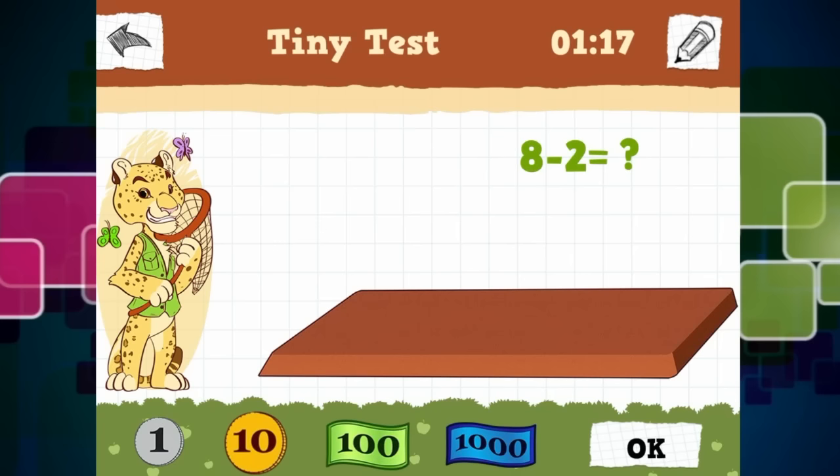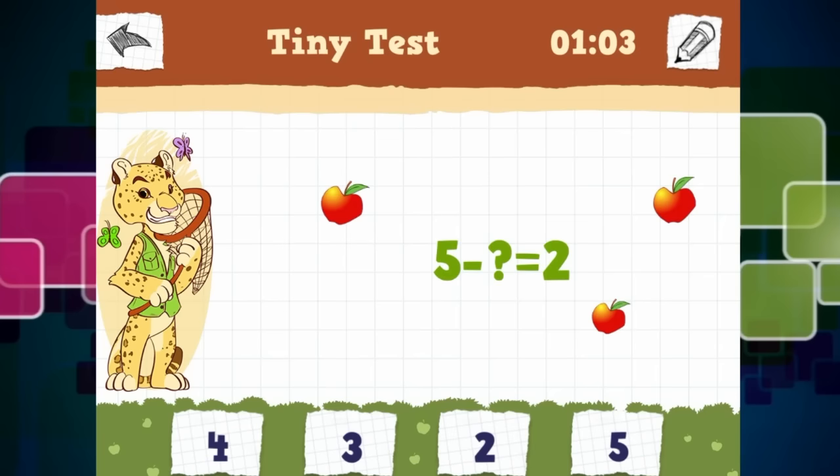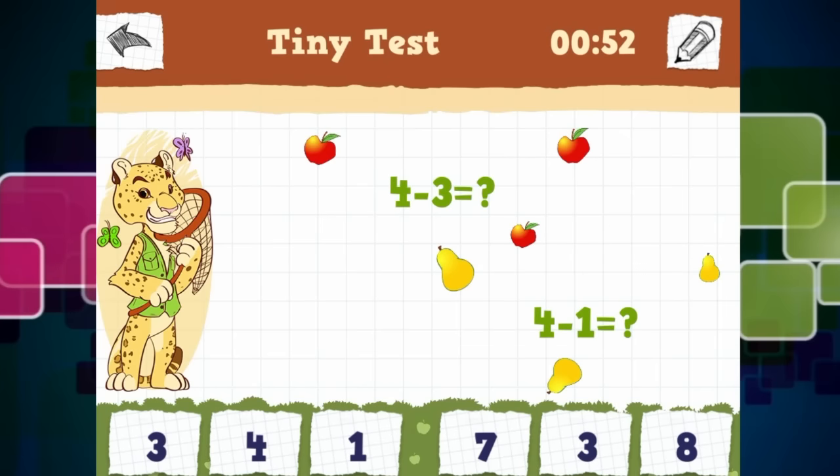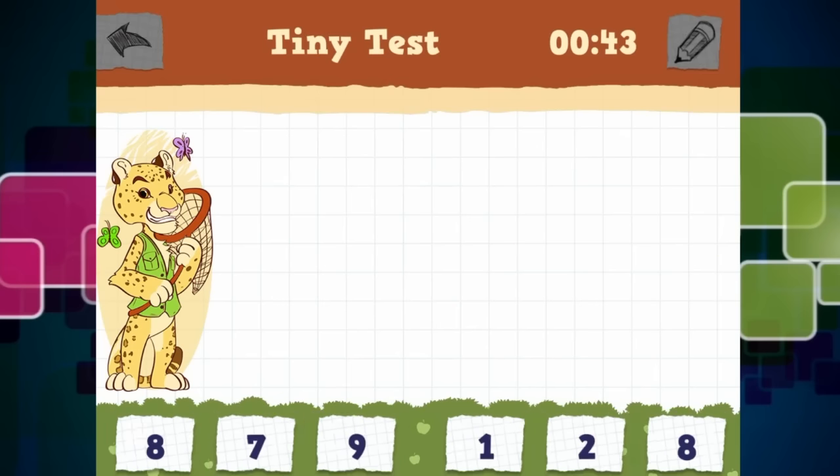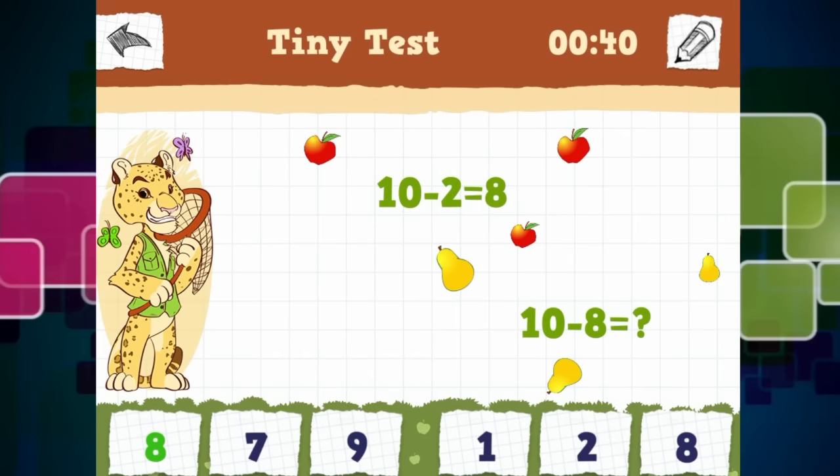Then eight take away two equals five. One, two, three, four, five. Yes. No, it equals six. How silly. And let's see. Five minus three equals two. See, this is tough. It's tough. Four take away three equals one. And four take away one equals three. Ten take away two is eight. Ten take away eight is two. Tricky.